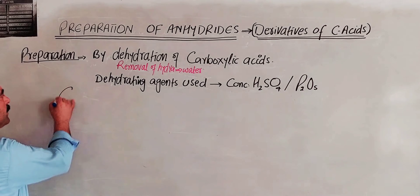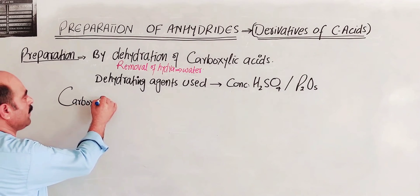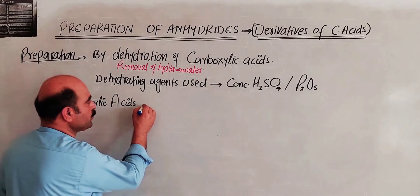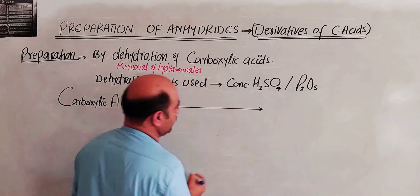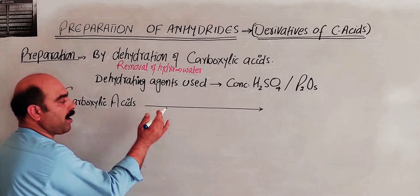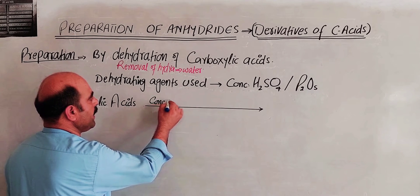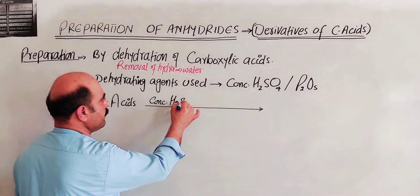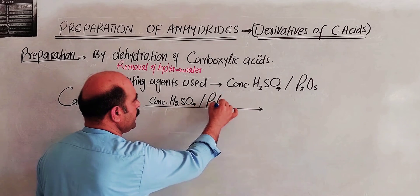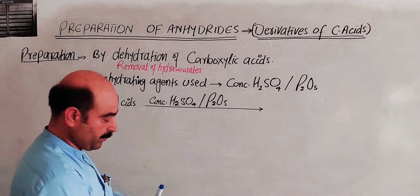Carboxylic acids are used with dehydrating agents. The dehydrating agents are concentrated H2SO4 and phosphorus pentoxide P2O5. These reactions are carried out at high temperature.